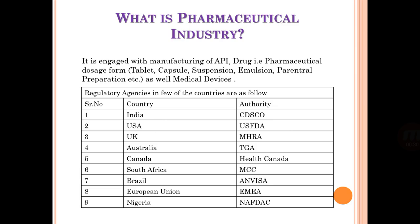First of all, what is the pharmaceutical industry? It is engaged with the manufacturing of API — active pharmaceutical ingredients — and drugs in various pharmaceutical dosage forms such as tablets, capsules, suspensions, emulsions, parenteral preparations, as well as medical devices.